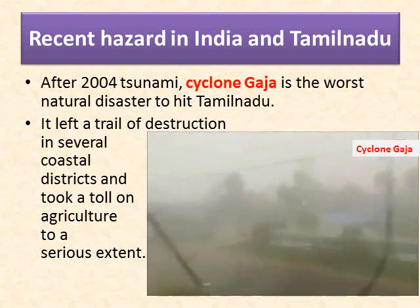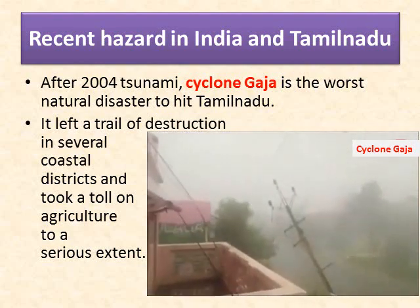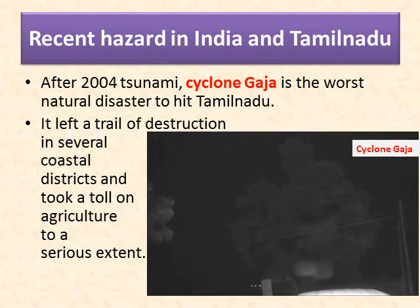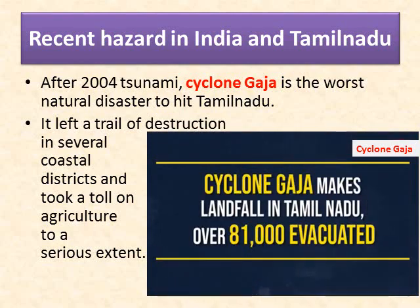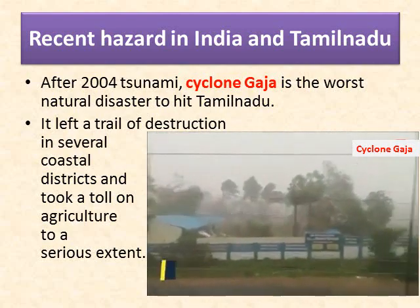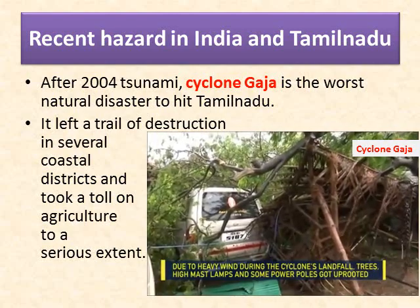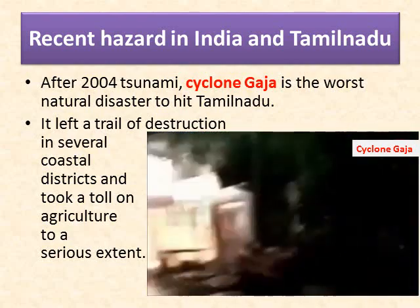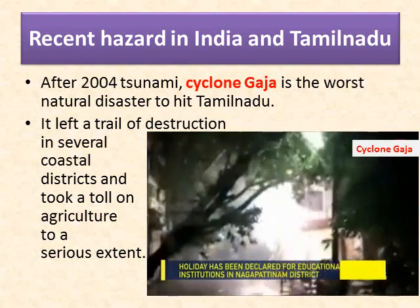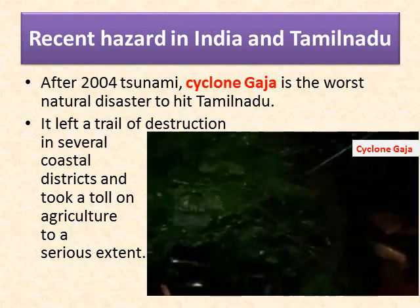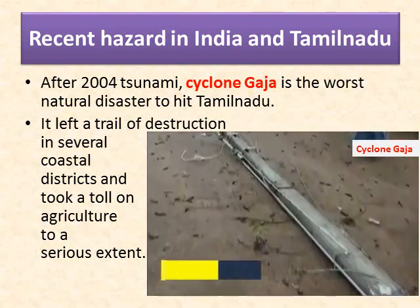Cyclone Gaja was the worst natural disaster in Tamil Nadu after the 2004 tsunami. It left a trail of destruction in several coastal districts and took a serious toll on agriculture. You can see Cyclone Gaja in the video — observe how strong the wind is, blowing in such a powerful manner. Around 81,000 people were evacuated from their homes. You can see landfall trees and high lamp posts being uprooted.